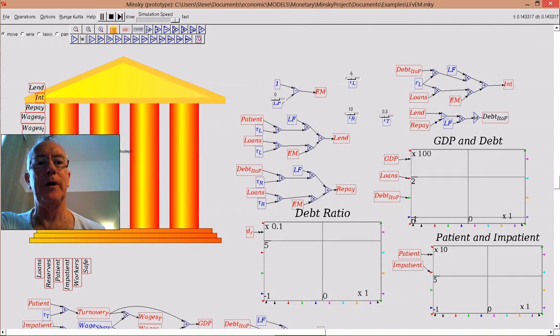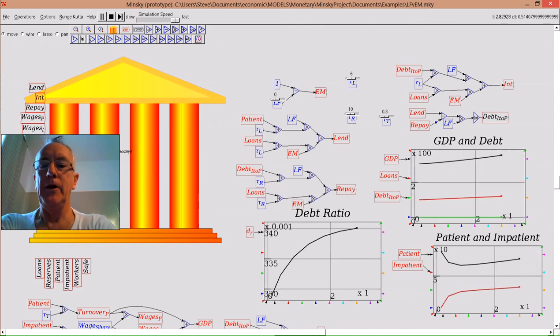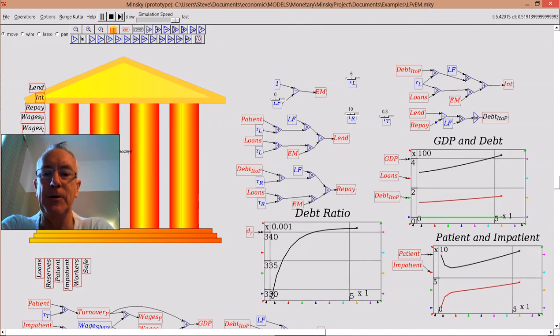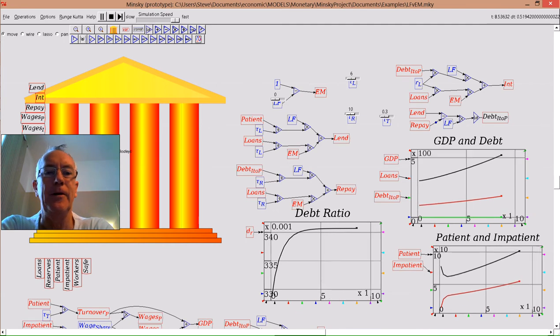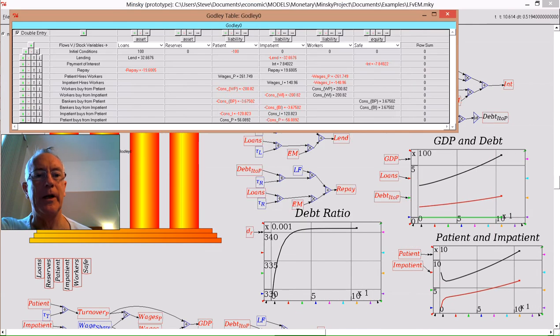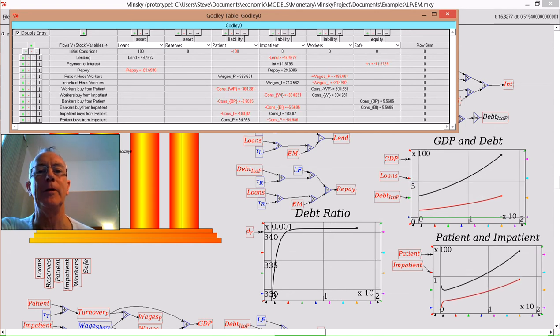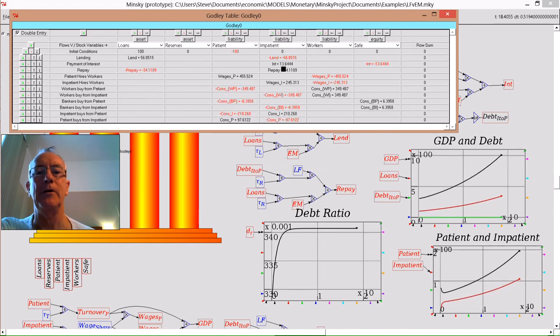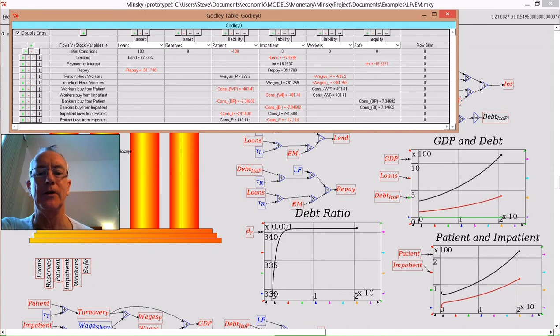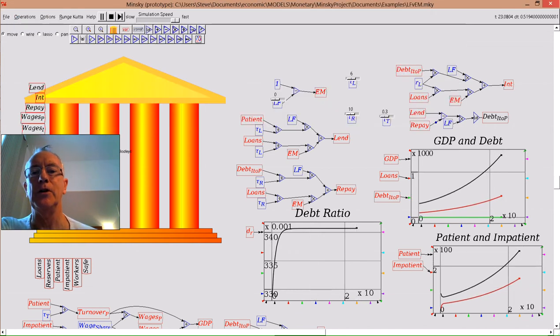several things that are very different from the loanable funds model. For starters, GDP is rising. The extra money being lent by the banking sector is increasing the amount of money in circulation in the overall economy, affecting both the amount of money directly in the patient account and in the impatient agent account.